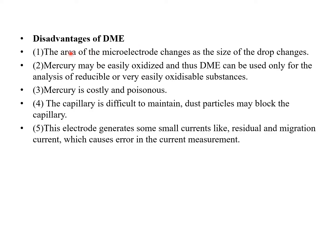The disadvantages of the dropping mercury electrode are: first, the area of the microelectrode changes as the size of the drop changes, so the area is not constant. Second, mercury is easily oxidized, so the electrode can only be used for analysis of reducible or easily oxidizable substances. Third, mercury is costly and poisonous. Fourth, the capillary is difficult to maintain and particles may block it. Finally, the electrode generates small currents such as residual or migration currents, which cause errors in measurements.